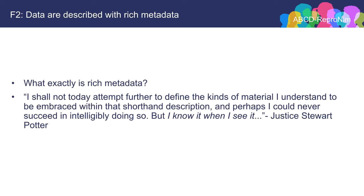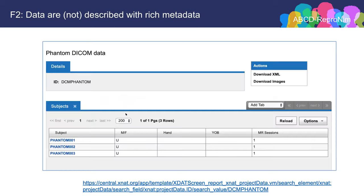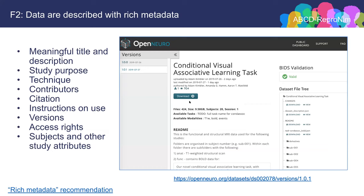With rich metadata, we can kind of tell it when we see it. Here are two examples of web resources. This is an older one — if you go to this page you're taken to a dataset that says it's phantom DICOM data and has some information: MF, year of birth, MR session. It really doesn't give you very much information. Contrast with the datasets in OpenNeuro, which has a lot more information: structural metadata about the files, how big it is, how many files, how many subjects, various tasks, documentation, DOI, authors. I would consider this an example of certainly richer metadata. Mostly when using this term in the context of FAIR, you're looking for a meaningful title and description, study purpose, techniques, contributors, full data citation, instructions on how to use it, versions, access rights, subjects, and other study attributes.